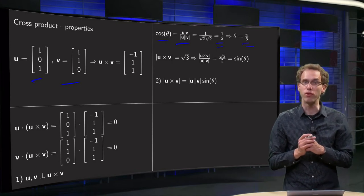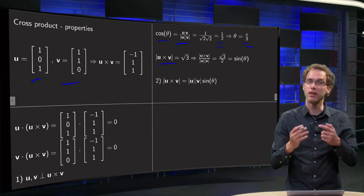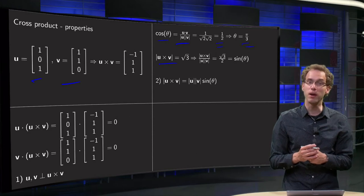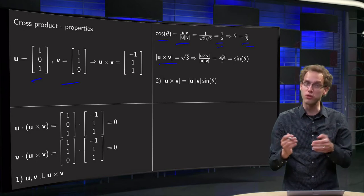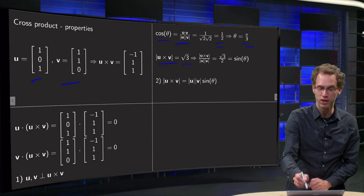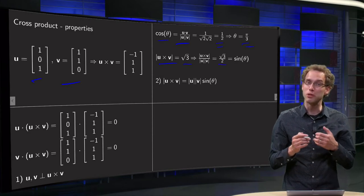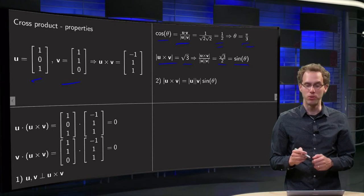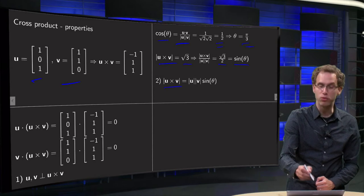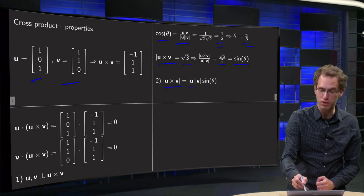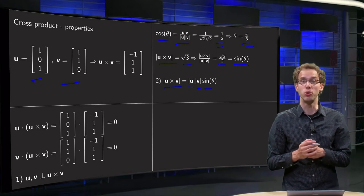Now we can also compute the following property. We can compute the length of the cross product and then divide by the length of u and v again. While the length of the cross product equals 1 plus 1 plus 1, and then the square root, so the square root of 3. Divide by the length, so we get 1 half square root of 3. And you see that that happens to be exactly the sine of theta. So you see in this case, the length of the cross product equals length u times length v times the sine of theta. And again, you can prove that this is true in general.